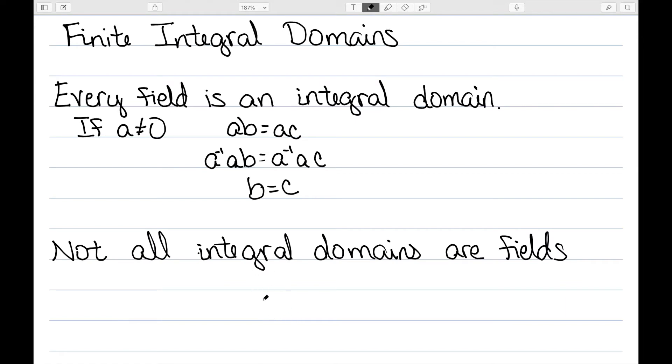However, this didn't go the other way around. Not all integral domains are fields. The easiest example is the integers. The integers absolutely have the cancellation property. However, they do not contain inverses. The inverse of 2 would not be an integer, so it would not be in that ring.